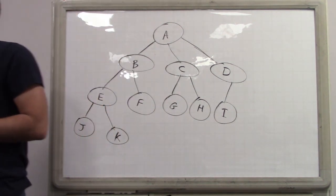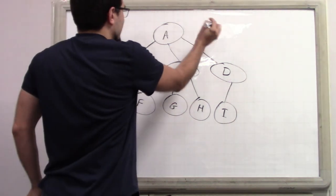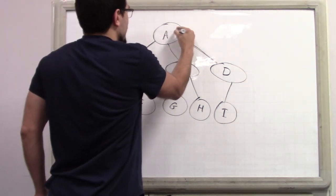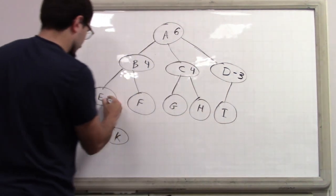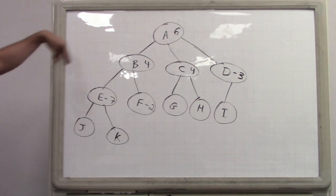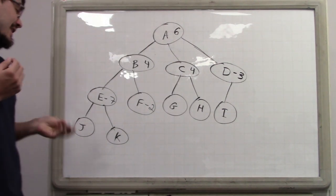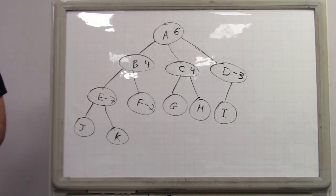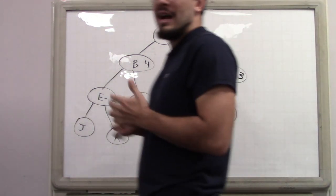Additionally, not every engineer is equally productive. Assume that every employee has a number indicating their value to this potential startup. Your task is: how do you select the subset of people to recruit such that you respect this constraint — nobody has to work with their former boss — and you maximize the value of the employees that you get? You maximize the sum, where the number is basically their expected contribution.